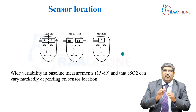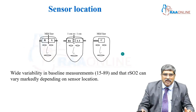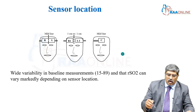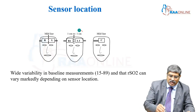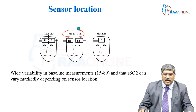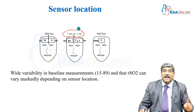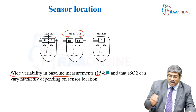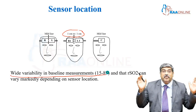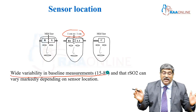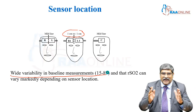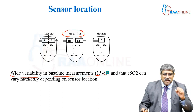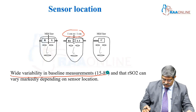Sensor location is very important. A slight deviation from the normal position — even by 1 centimeter — can cause wide variability in the baseline measurement, ranging from 15 to 89. So much variation can happen with just a slight deviation of the sensor position.